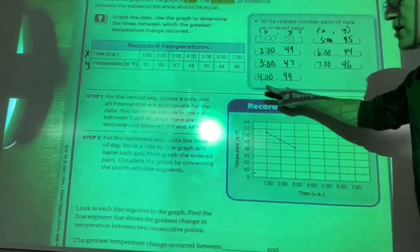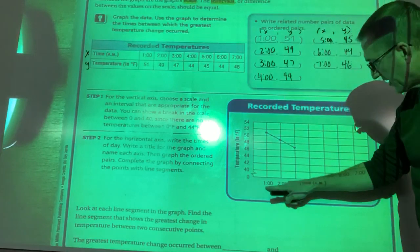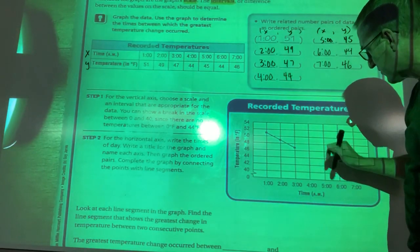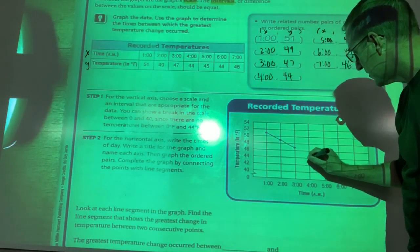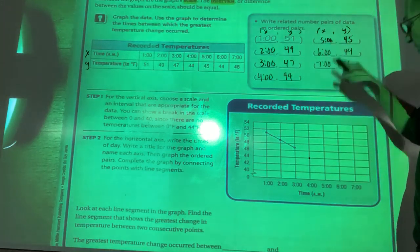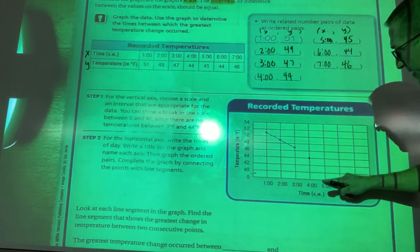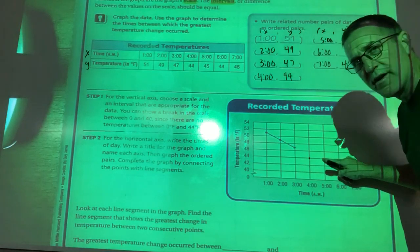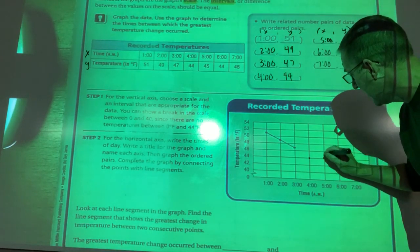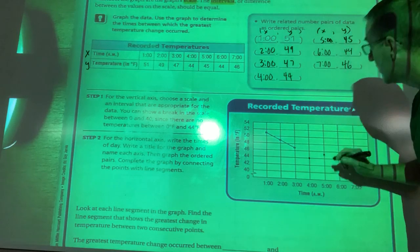So I'm going to go to four o'clock and go to 44. So I go over to four and up to 44, which is right here. Five o'clock to 45. So I go over to five o'clock up to 44. There is no 45, but there is a 46. So it's right in between.